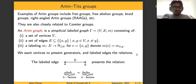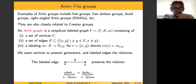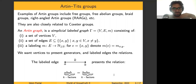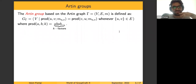We want to use this information from the graph to define the group by giving its presentation. We want the vertices of the graph to present generators and the labeled edges to present the relations of the group. In particular, if we have a labeled edge connecting vertices A and B with label — a natural number K — then this represents the relation: on the left-hand side an alternating product of A and B starting with A of K factors, and on the right-hand side an alternating product of B and A of K factors. The Artin group is then defined by this presentation, with generators the vertices and relations coming from edges.